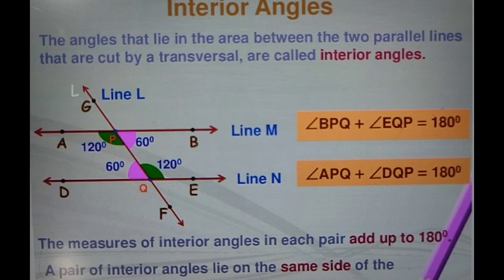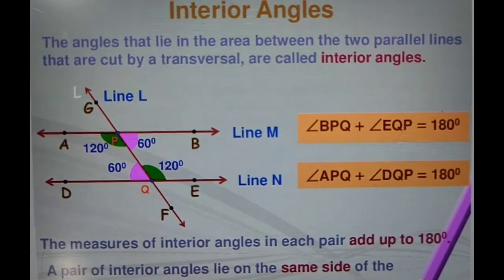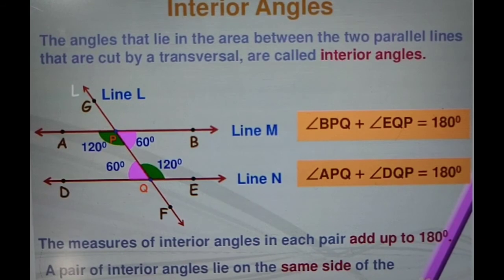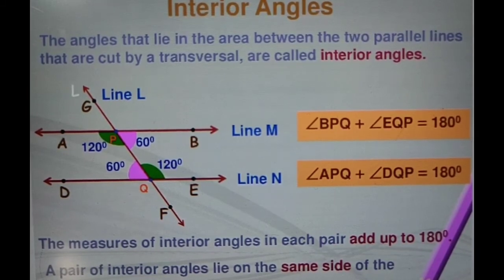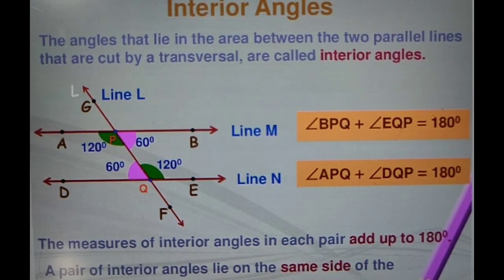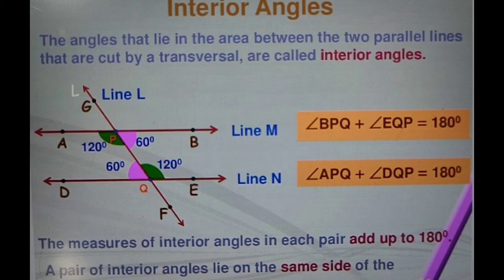So students, these are all the properties of angles, starting from the point and going up to all the interior and exterior angles related to the transversal line. Go through all the slides of this presentation, understand all the slides one or two times, then we will start with the next exercise and the few more questions left in exercise 5.1.